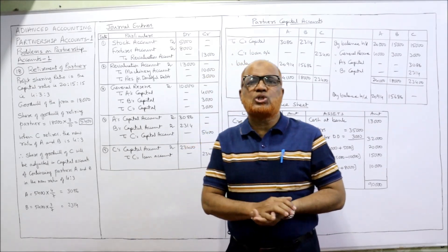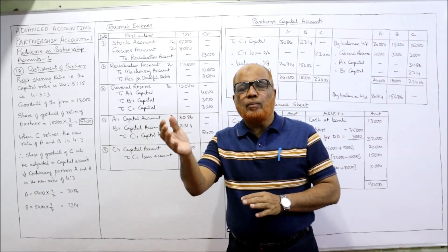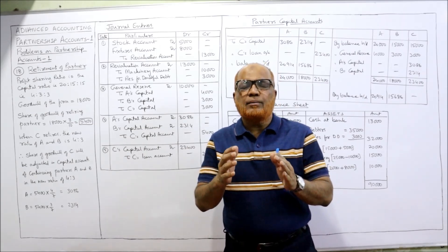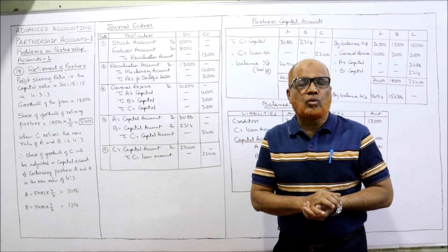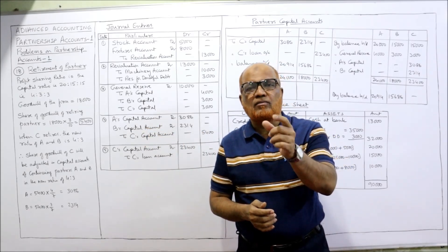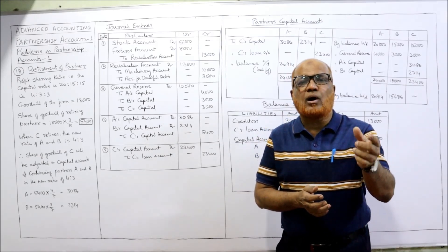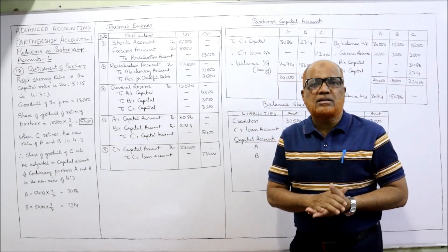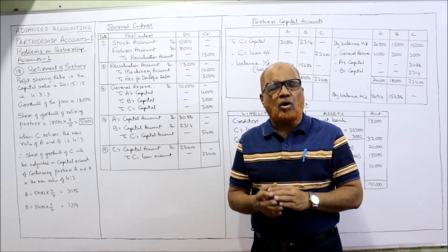The same techniques and the same procedure we will follow in retirement of a partner also. But in admission of a partner, a new partner will bring goodwill, whereas in the case of retirement, we have to give the share of goodwill to the retiring partner. We will not raise the goodwill — we adjust the goodwill amount in the capital accounts. The retiring partner's capital will be credited and the remaining partners' capital accounts will be debited. Also, the amount due to the retiring partner will be transferred to the retiring partner's loan account.